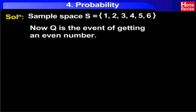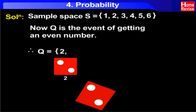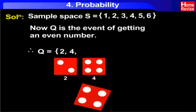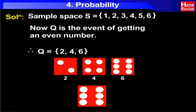Now, Q is the event of getting an even number. Therefore, Q is equal to { 2, 4, 6 }. Therefore, N(Q) is equal to 3.